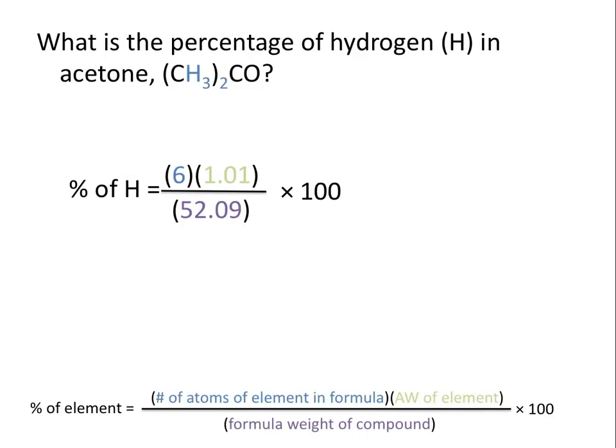We then multiply this value times 100 to give us a percent and come up with the answer that acetone is composed of 11.6 percent hydrogen by mass. Thanks for watching the Chemistry Solution. We hope you enjoyed this tutorial.